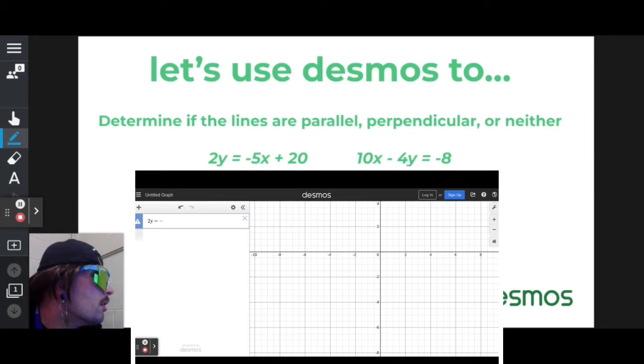2y equals negative 5x plus 20. Then you hit the down button to get to the other line. We'll type out 10x minus 4y equals negative 8.